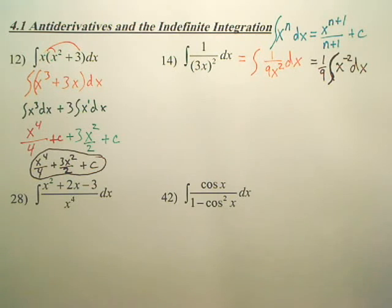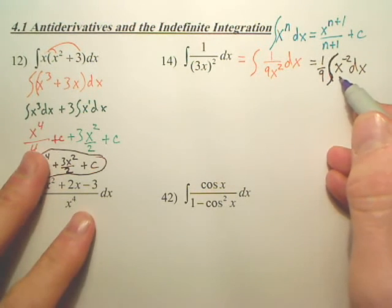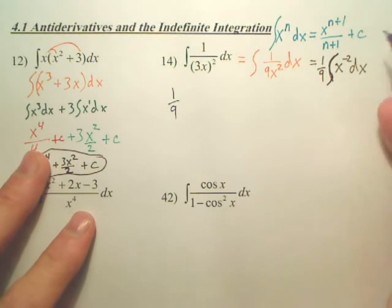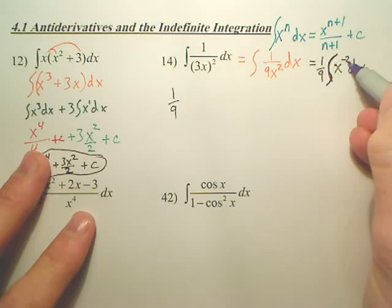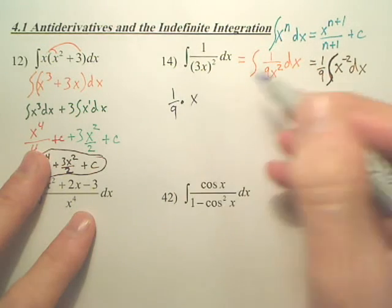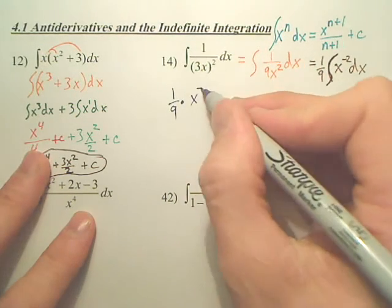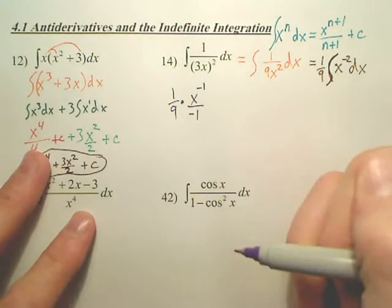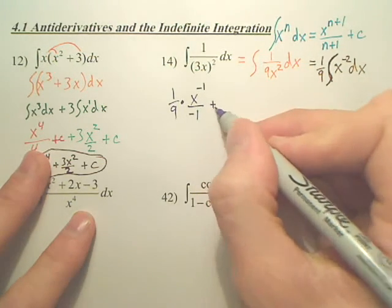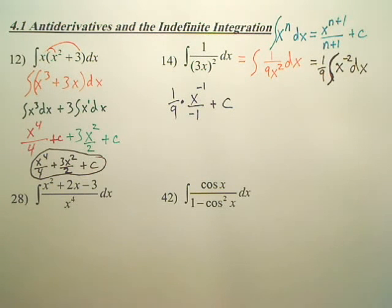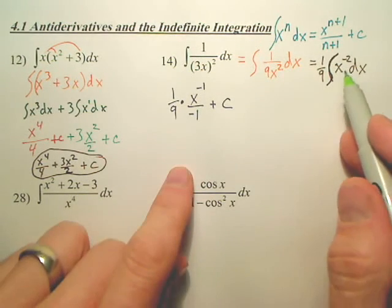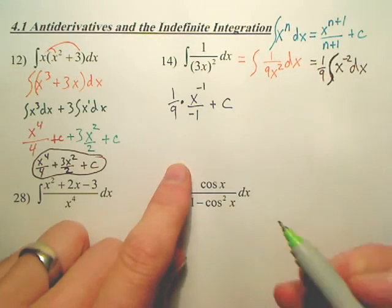Okay, so let's integrate this. Well, the one-ninth stays out front, and then add 1 to this. When you add 1, isn't that x to the negative first? And then you divide by the negative 1, plus a c, and we're done. Just simplify it down. The key is, you first have to change it to be more accessible and reasonable.